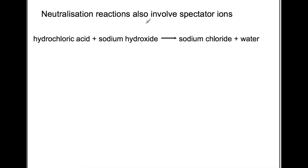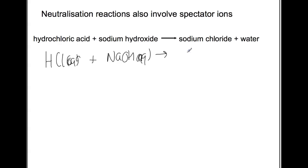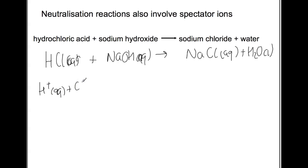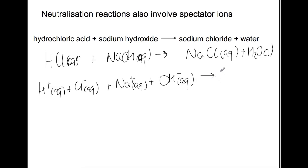Neutralization reactions also involve spectator ions and we carry out the same steps. We write this out as a balanced equation: hydrochloric acid aqueous plus sodium hydroxide aqueous to produce sodium chloride, which is soluble so aqueous, and water which is a liquid. We now split this up into ions: H+ aqueous plus Cl⁻ aqueous, sodium ions aqueous, and OH⁻ ions aqueous, to produce sodium ions plus chloride ions plus water as a liquid.